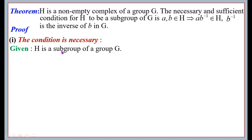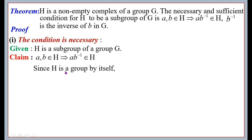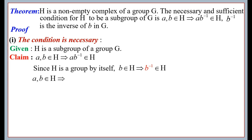We are given that H is a subgroup of a group G. Now we have to show that a, b ∈ H implies ab⁻¹ ∈ H. Since H is a group by itself, b ∈ H implies b⁻¹ ∈ H. We have taken two arbitrary elements a and b from H.